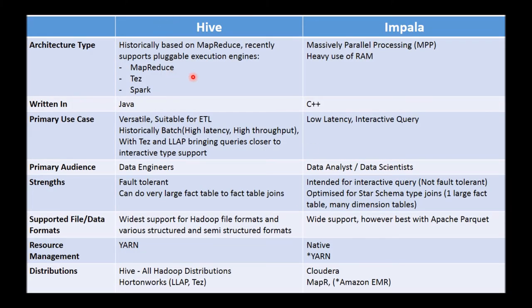Now that we understand how Hive works with its pluggable execution engine and how Impala works, let's look at some of the other attributes. Coming to the primary use case, Hive — given that it historically relied on MapReduce — was more of a batch-oriented solution. When comparing the two historically, Hive was about high throughput, and the challenge with high throughput is you also end up with high latency.